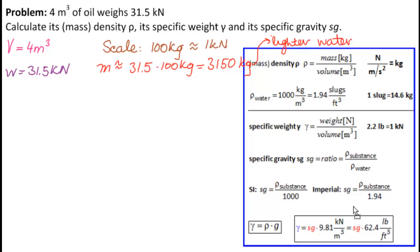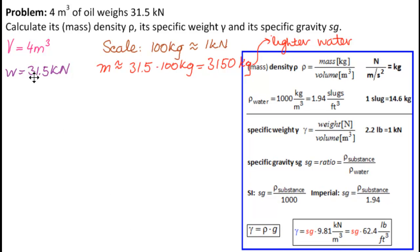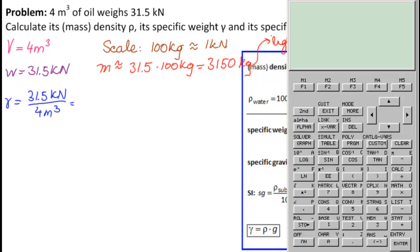So, here are our formulas. What do we have? We have weight and volume. What's the easiest thing to calculate first with weight and volume? The specific weight, γ. So, γ equals weight over volume. So, 31.5 kilonewtons over 4 meters cubed. And get a calculator.